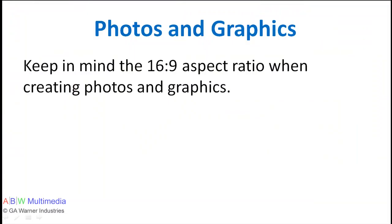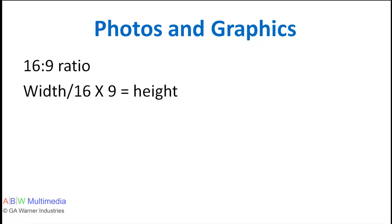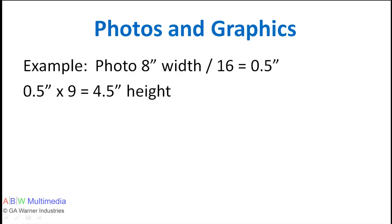Keep in mind the 16 by 9 aspect ratio when creating photos and graphics. Use the formula: width divided by 16, multiplied by 9, equals the height — when sizing photos and graphics for a 16 by 9 slide. For example, if you have a photo that is 8 inches wide, divide 8 inches by 16 (the aspect width), which equals 0.5 inches. Then multiply 0.5 inches by 9 (the aspect height), which will give you a height of 4.5 inches.